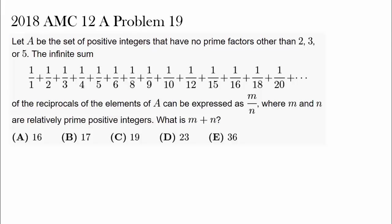This is a pretty interesting question from 2018 AMC 12A, problem 19. Let A be the set of positive numbers that have no prime factors other than 2, 3, or 5. The infinite sum of the reciprocals of the elements of A can be expressed as M over N, and we simply have to find M plus N.